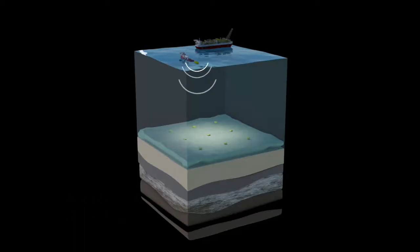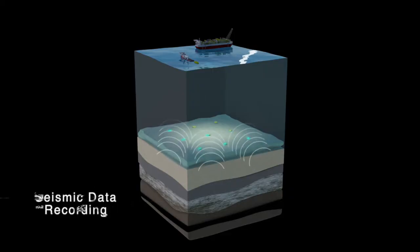In a seismic campaign, pressure waves are emitted by a source towed by a ship. These waves traverse the water, penetrate the seafloor and are reflected by the geological layers in the subsurface. This data is recorded by the nodes.